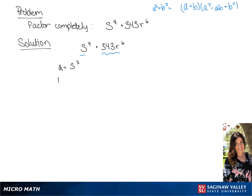Now we're going to take the cubed root of 343r to the 6th power for our b term. We'll get 7r squared.